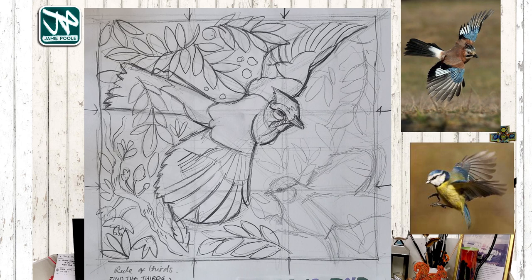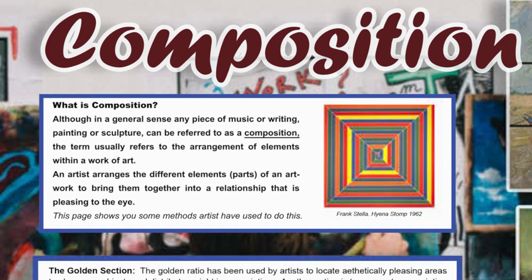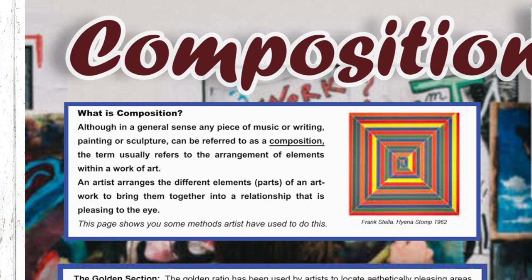There are other techniques - one is called the rule of thirds, one is called the golden section, and the golden spiral. We'll have a quick look at those on this worksheet. In a general sense, any piece of music, writing, painting or sculpture can be referred to as a composition, but the term usually refers to the arrangement of elements within a work of art. An artist arranges different elements or parts of an artwork to bring them together into a relationship that is pleasing to the eye.